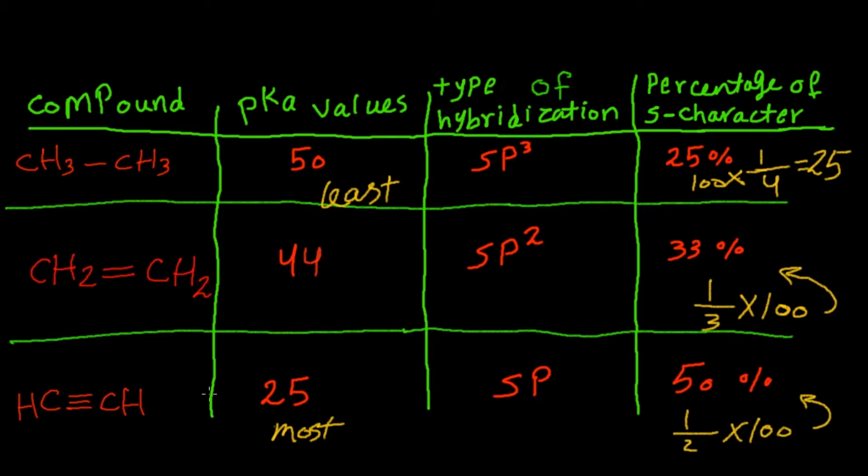We want to figure out why this acetylene compound is more acidic than ethane and ethene. The reason lies in the stability of the conjugate base. The reason why this conjugate base is relatively stable in comparison with those two conjugate bases is because of the percentage of s orbital character.